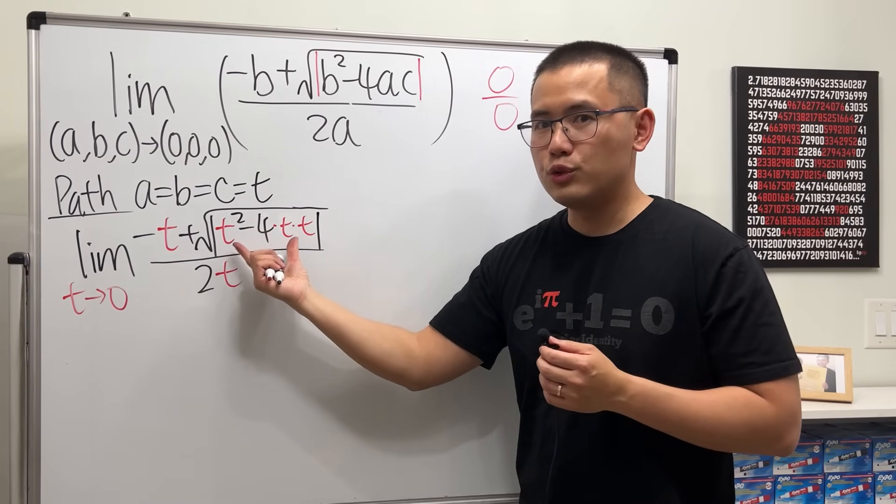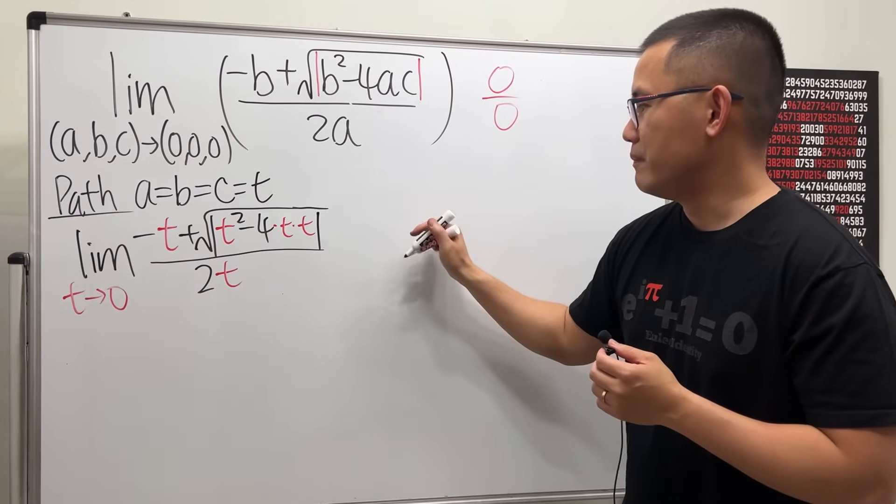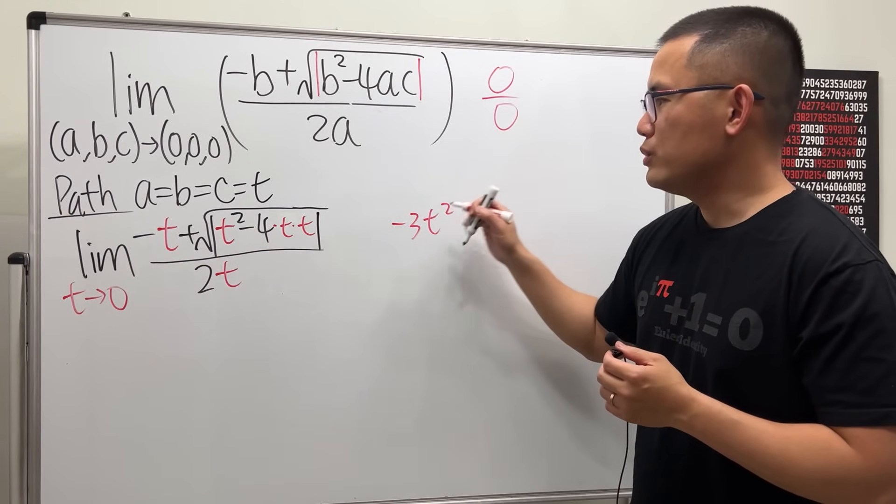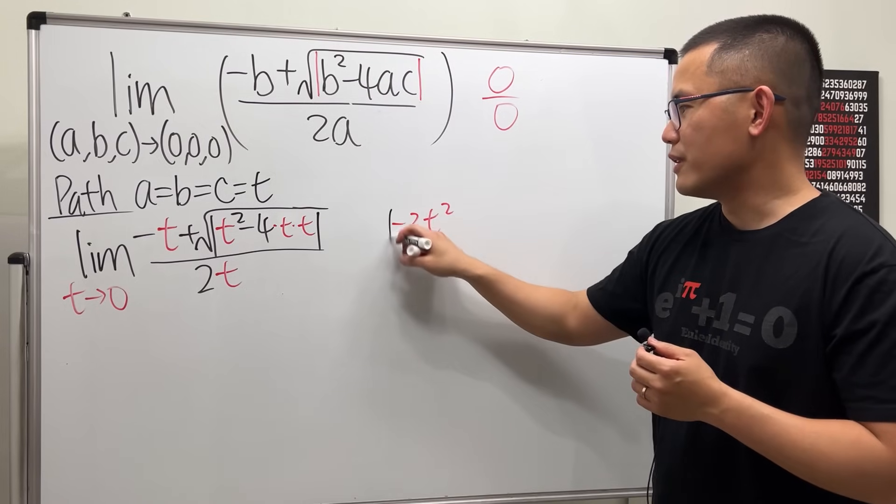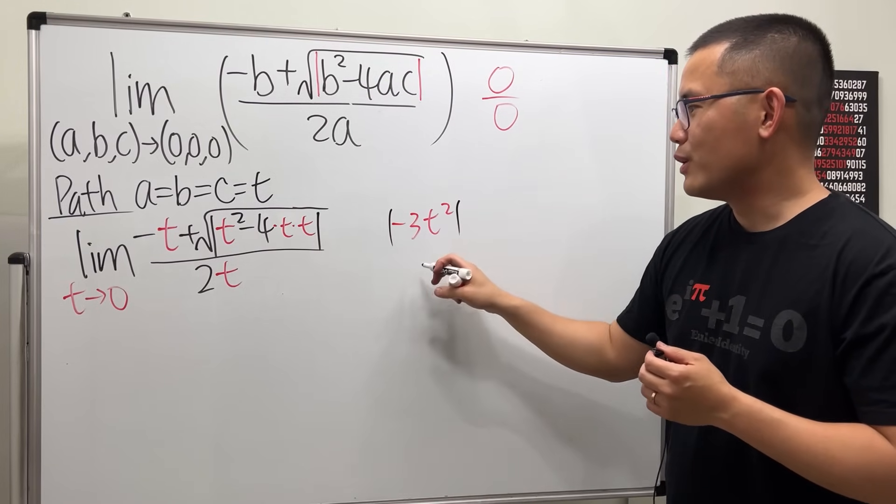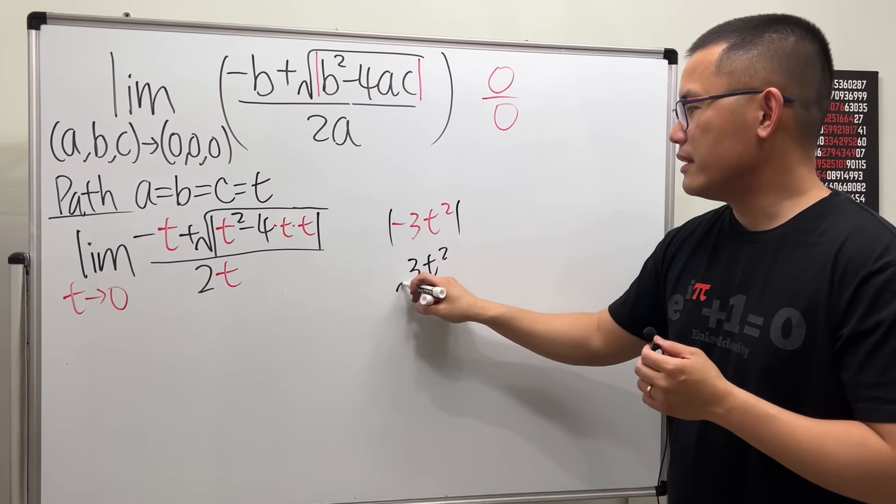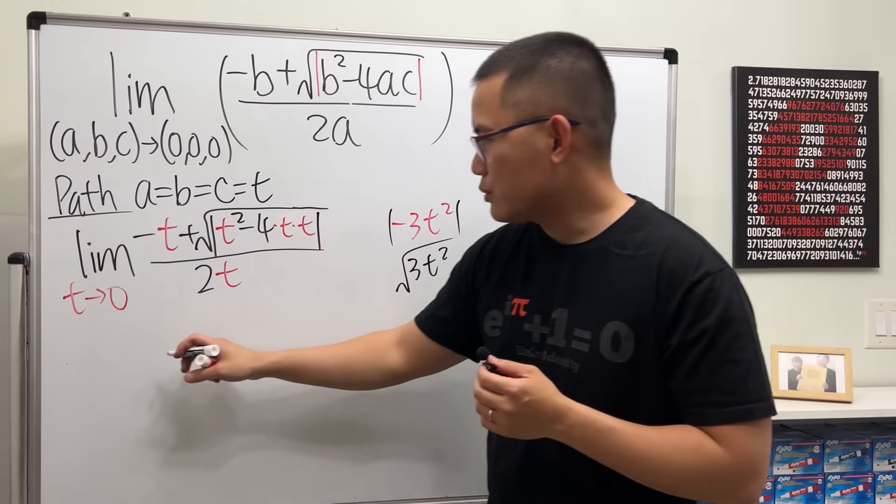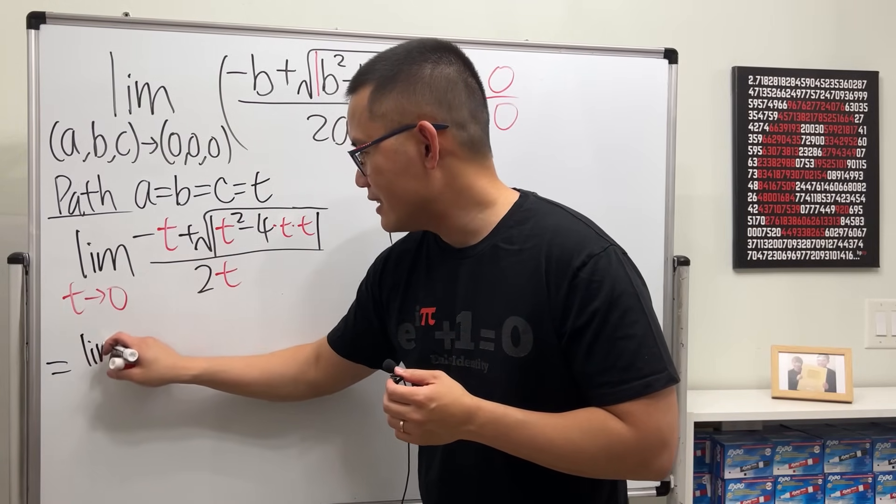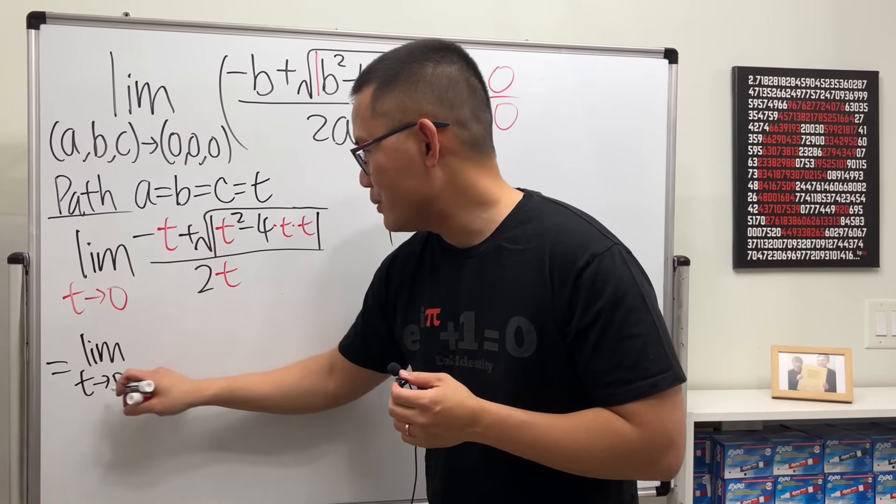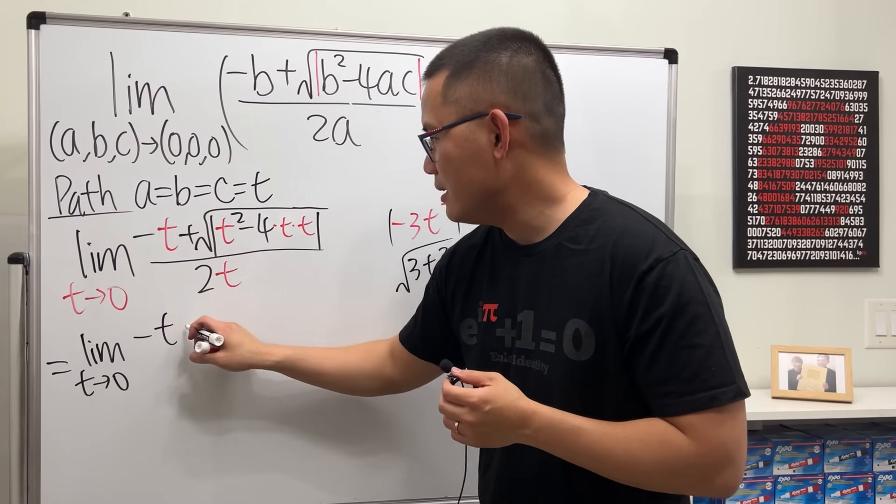And then close the absolute value over two times t. Look, this is t squared minus four t squared, that's negative three t squared. Hmm, told you we need the absolute value so that we don't ruin it in front. So this right here will just pass, this three t squared, and take the square root for that.